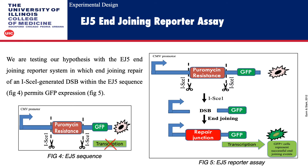We are testing our hypothesis with the EJ5 end joining reporter system, in which end joining repair of an I-SceI-generated double strand break within the EJ5 sequence, shown in figure 4, permits GFP expression. As shown in figure 5, in the presence of I-SceI a double strand break is introduced and when repaired by end joining results in the transcription of GFP. It is important to note that GFP-positive cells represent successful end joining events.